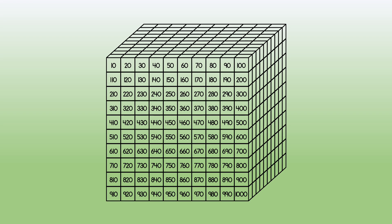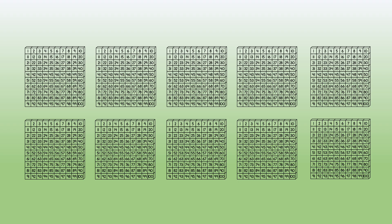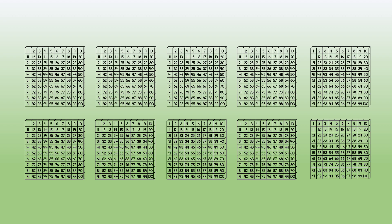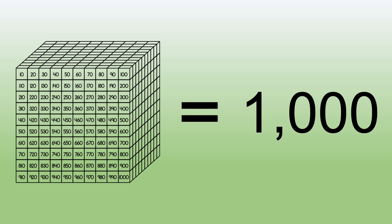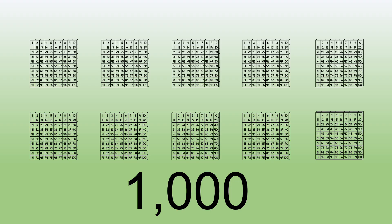And this is a cube. If we take 10 flats and put them on top of each other, we have a cube. A cube is 1,000. 10 flats or 10 hundreds is 1,000.